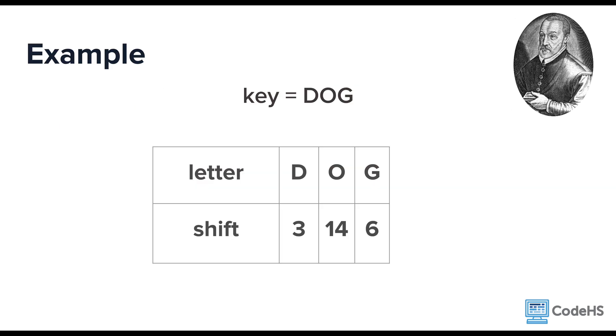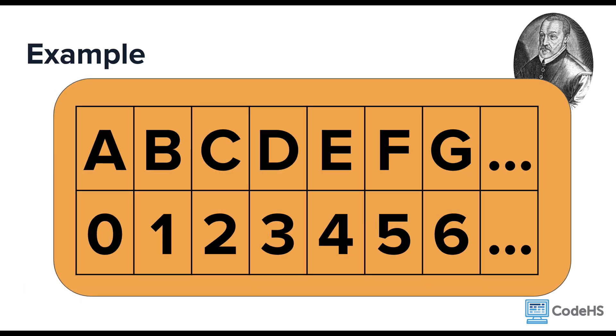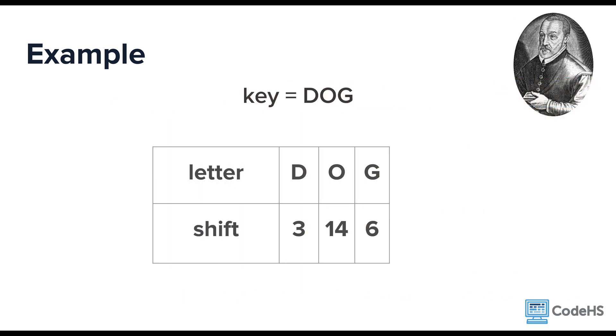Let's use a keyword of dog. Now the letter A would be a shift of 0, B is a shift of 1, C is a shift of 2. So this makes D a shift of 3. The same process gives us a shift of 14 for O, and a shift of 6 for G.